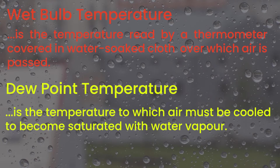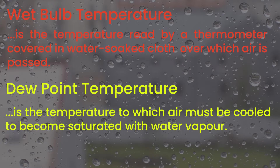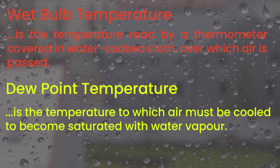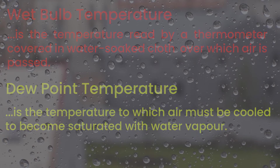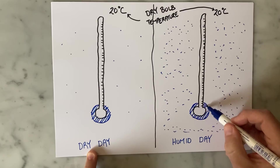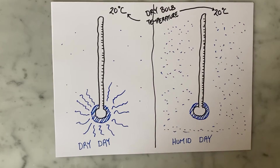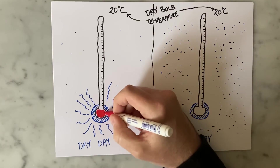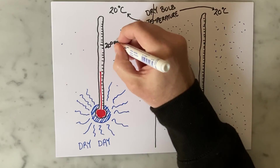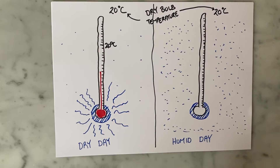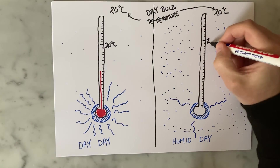A thing to note before we start is that both of these definitions talk about air. Wet Bulb Temperatures are predominantly used when talking about the air-water system, but Dewpoint Temperatures can be used for any gas that contains some sort of substance that is about to condense. I have already made a video talking about Wet Bulb Temperature and its relevance in process engineering, and I am going to assume that you have watched it so that we are able to differentiate between Wet Bulb and Dewpoint for this video.